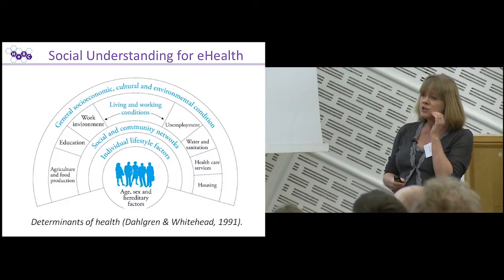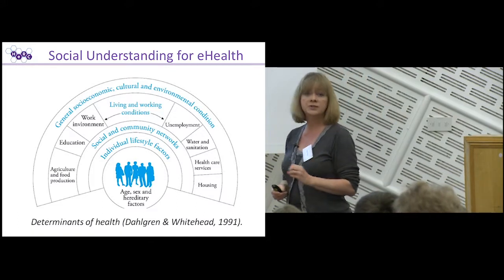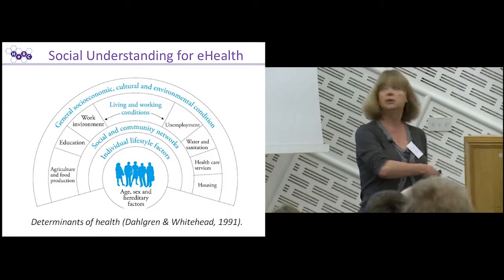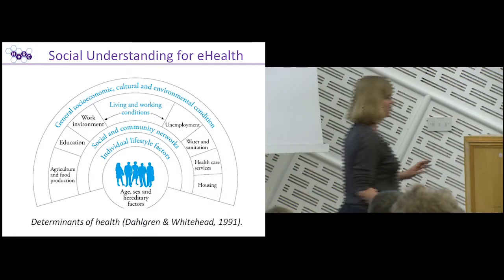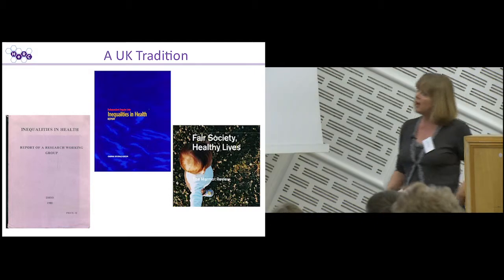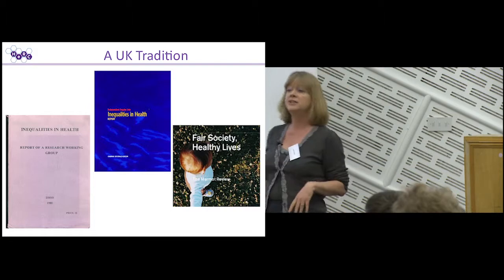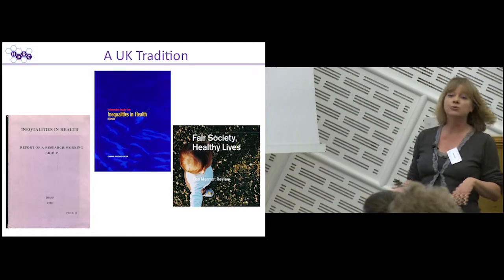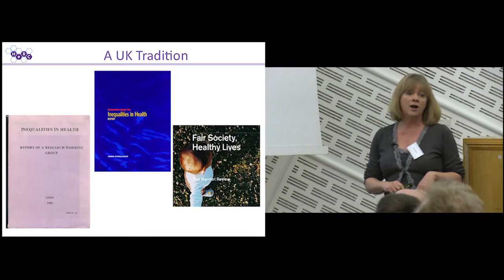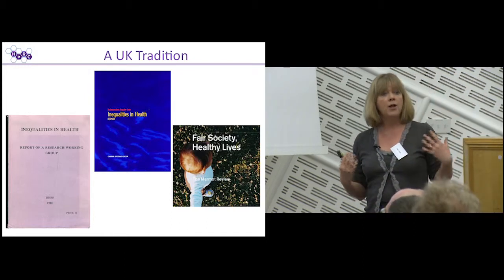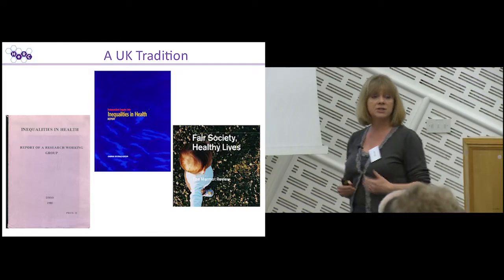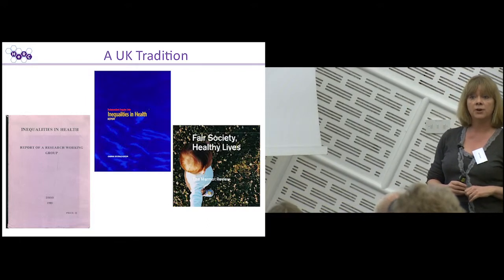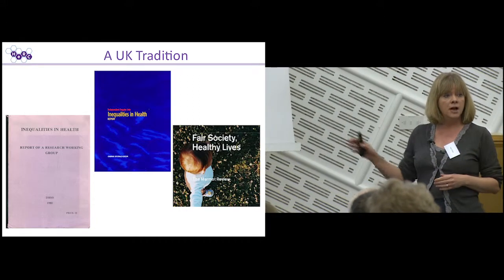And yet in the UK, we've actually got a really strong tradition of research in the social determinants of health and health inequalities, stretching as far back as the Black Report published in 1980, and repressed by the government in power at the time it was published, through the Aitchison Report in the 1990s and the 2010 Marmot Review. These are three major reviews of health inequalities research commissioned by the governments of the day and supposed to inform our policy and practice in addressing health inequalities, with a long tradition of research underpinning those as well.